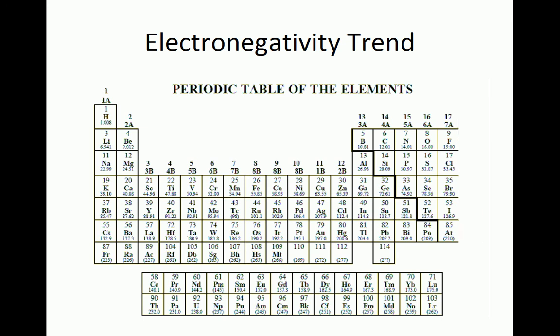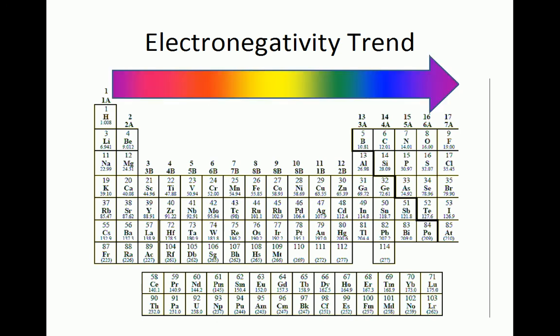Electronegativity increases from left to right in a row of the periodic table as non-metals need to gain electrons to achieve the more stable noble gas electron configuration.